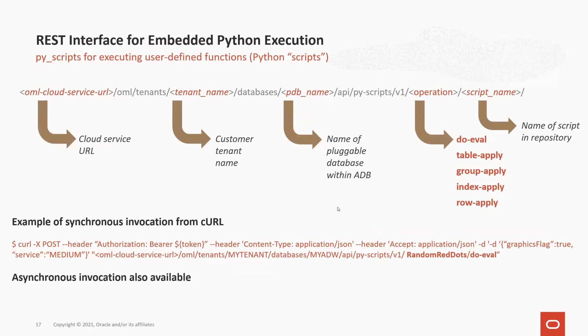OML4Py on Autonomous Database also offers a REST interface for invoking embedded Python execution. Here are some of the REST endpoints for invoking user-defined Python functions stored in the script repository. In this example, which is invoked synchronously from curl, we use the doEval operation on a user-defined function called random_red_dots. Asynchronous invocation of REST endpoints is also supported.